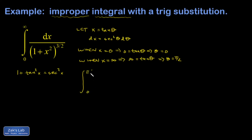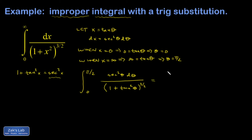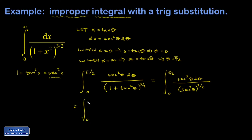My integral is now from 0 to pi over 2. dx becomes secant squared theta d-theta. In the denominator I have 1 plus tangent squared theta to the 3-halves power, and 1 plus tangent squared turns into secant squared — so I have secant squared theta to the 3-halves. Raising something to the 3-halves means square-rooting then cubing, giving secant cubed.